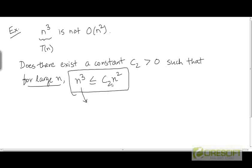We can cancel out n² on both sides here. c₂ needs to be greater than or equal to n. Now that's not possible because c₂ is a constant. And no matter what positive value for a constant you choose, we can always increase n beyond that point.